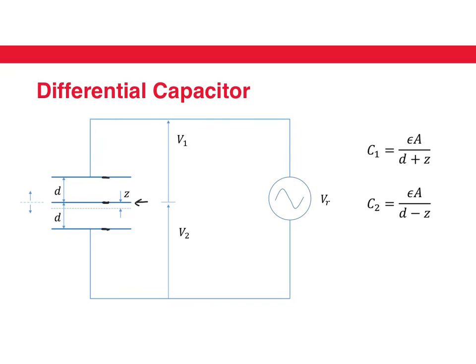C1 can be written as having an inverse relationship to d plus z, while C2 is dependent on d minus z.